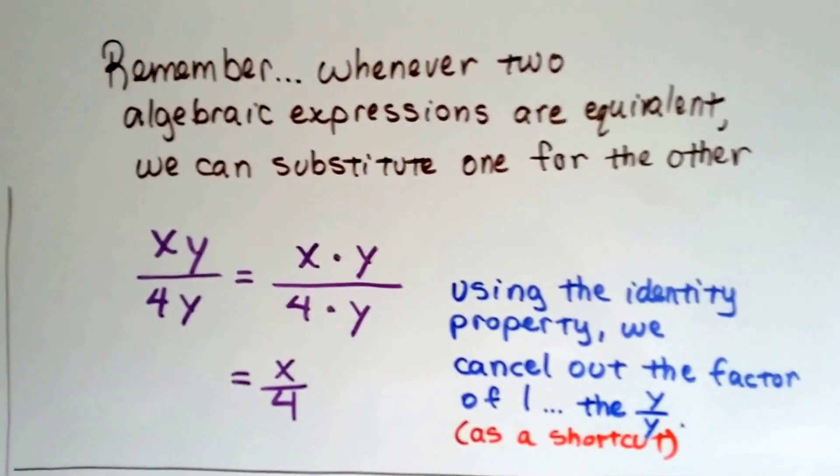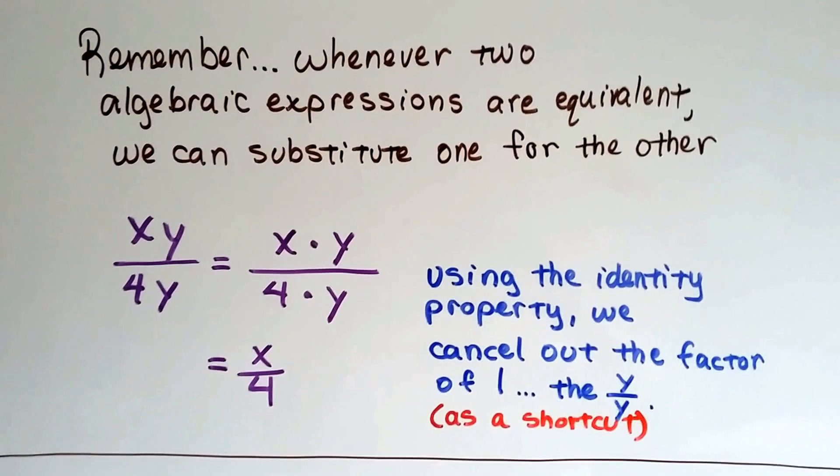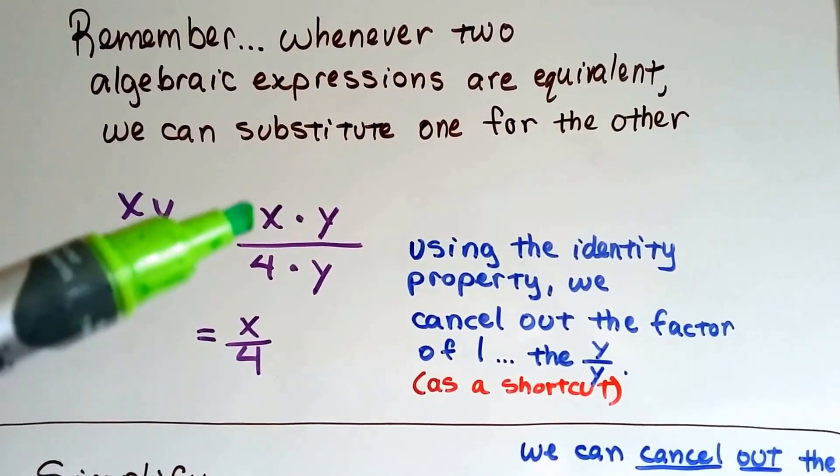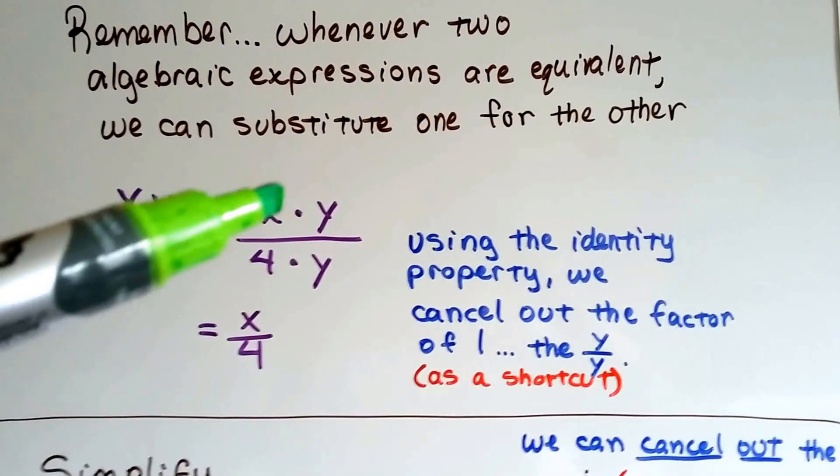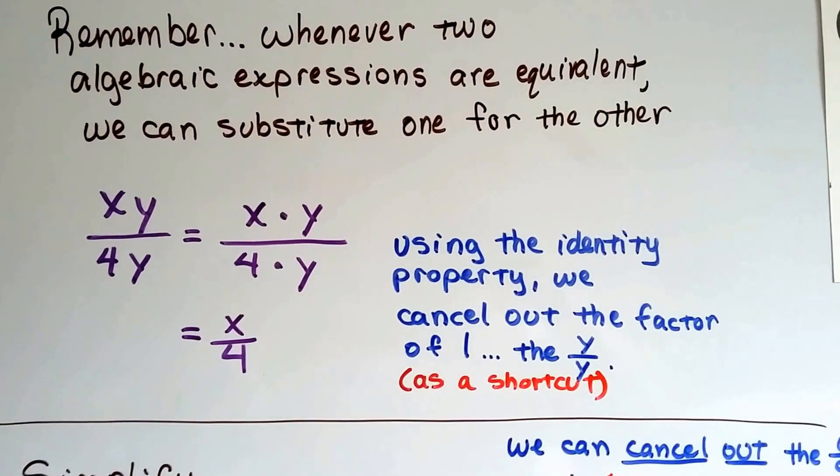Now remember, whenever two algebraic expressions are equivalent, we can substitute one for the other. So if we have xy over 4y, that's really x times y over 4 times y. So this is going to cancel out as a 1, and we're going to end up with x over 4.